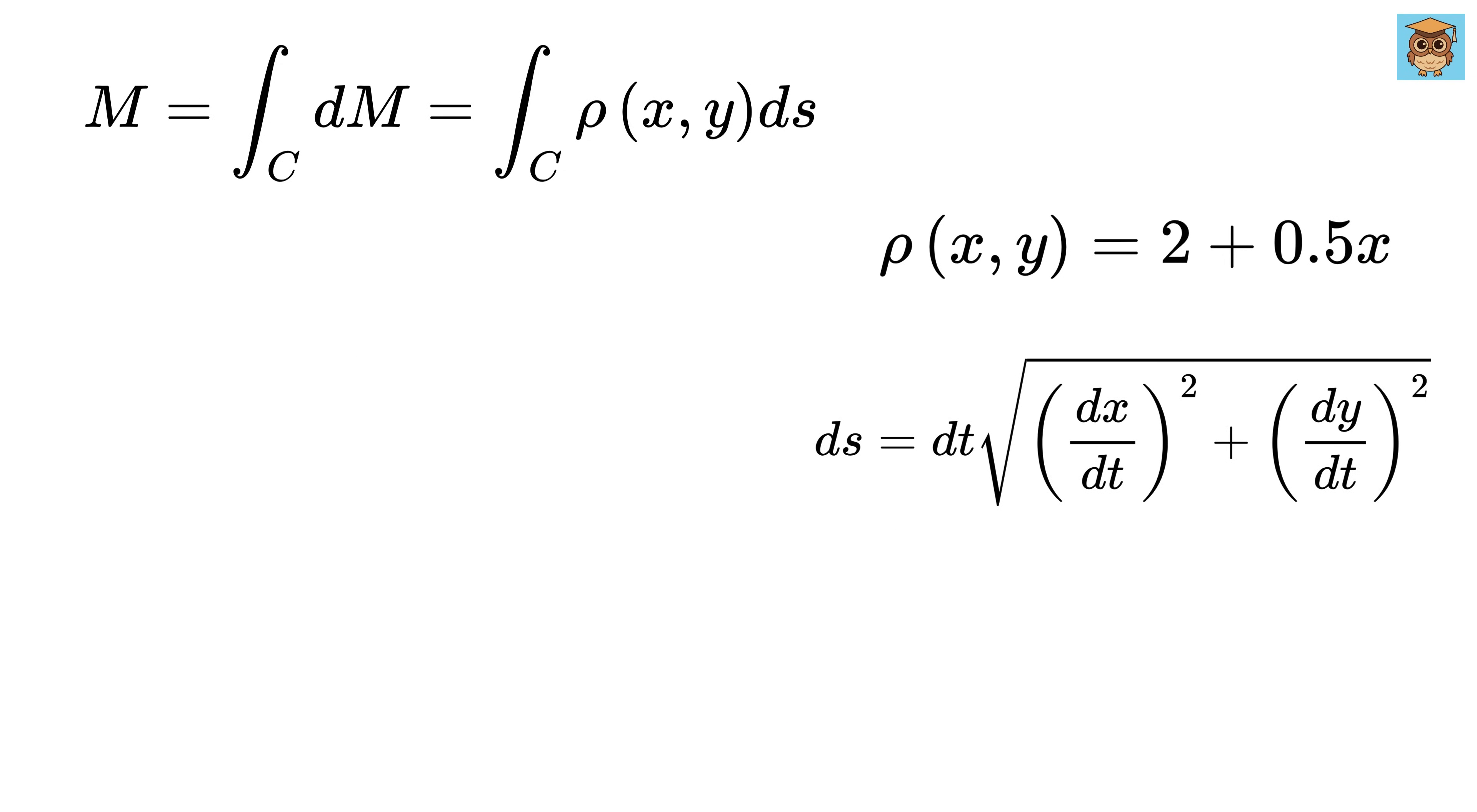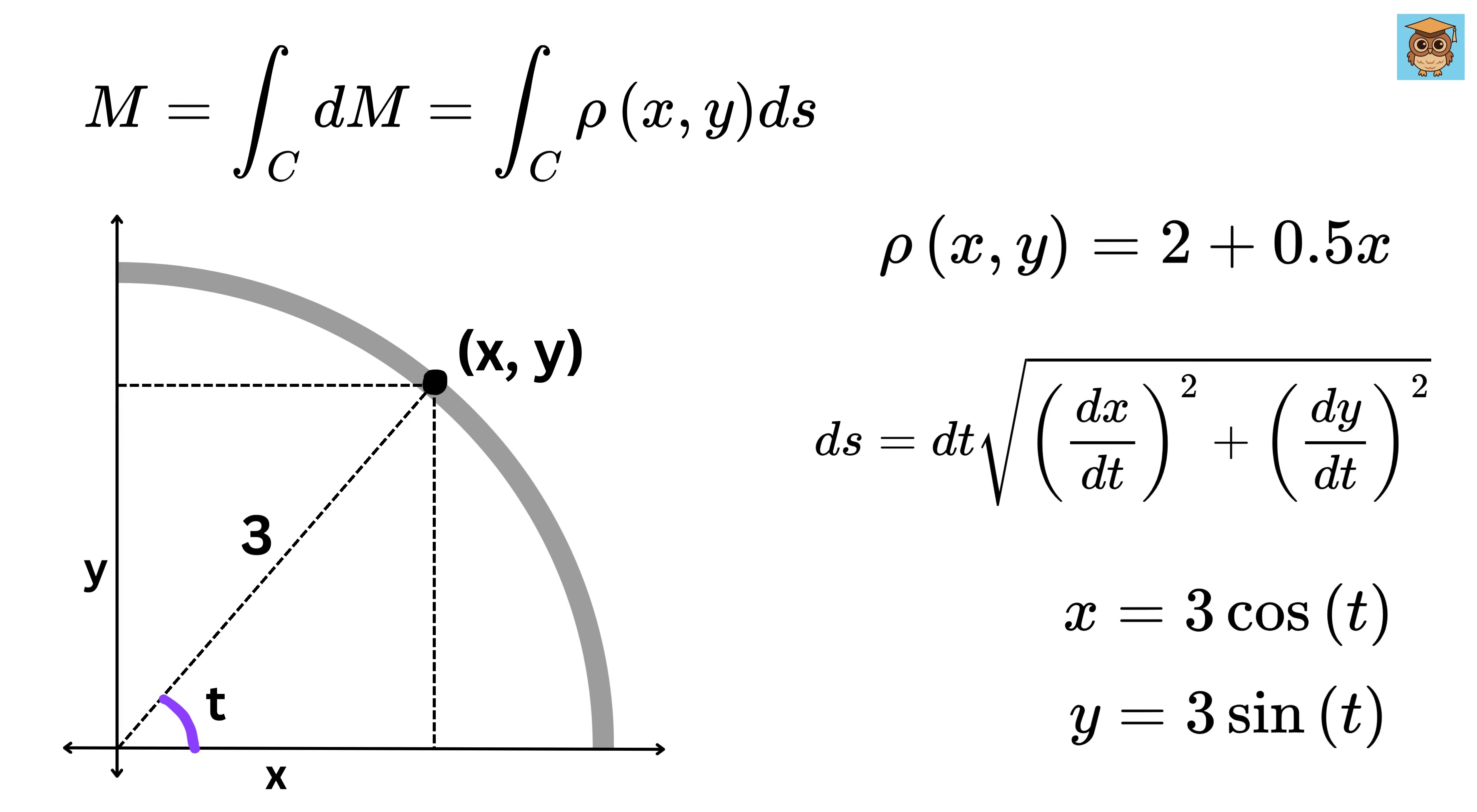Now, in our case, since our curve is a quarter circle, so if we take t as this angle, then x becomes 3 cos t, and y becomes 3 times sine of t, where our t goes from 0 to 90 degrees, or π over 2 radians.